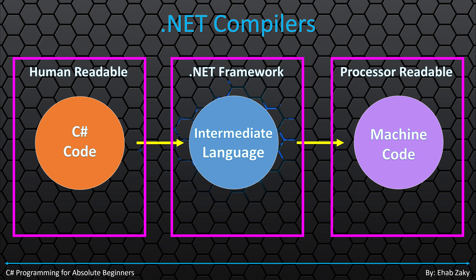When you try to execute this code, the CLR instantaneously translates this IL code to its equivalent machine code in the background. Of course, this process consumes some processing time, so it is slower than directly translating to machine language like classical compilers.